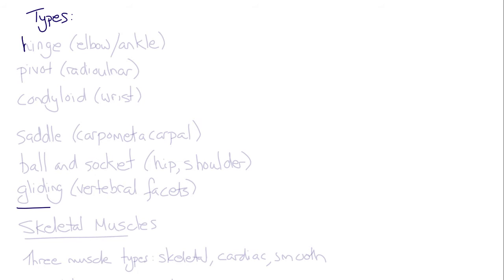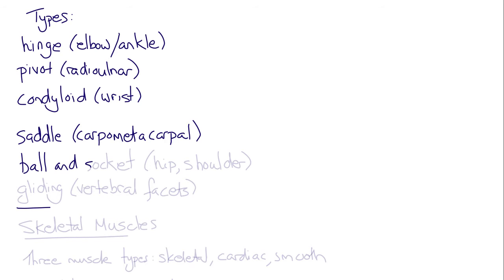The types of diarthrodial joint include hinge joints like the elbow and ankle, pivot joints like the radial ulnar joint between the radius and ulnar of your forearm, condyloid joints like the complex joints at the wrist, saddle joints like the carpometacarpal joint on your thumb, ball and socket joints like at the hip and shoulder, and gliding joints like the vertebral facets.